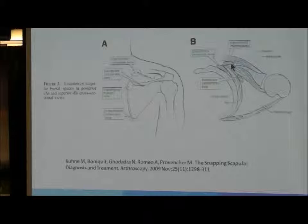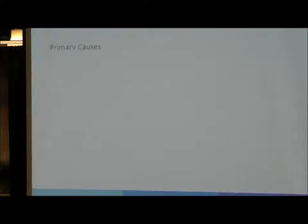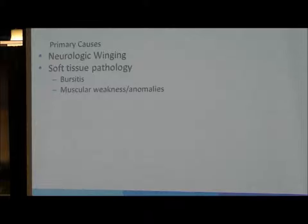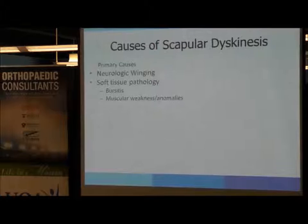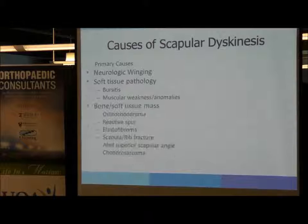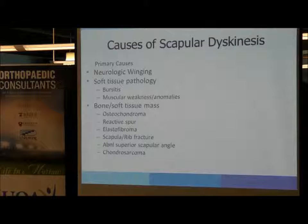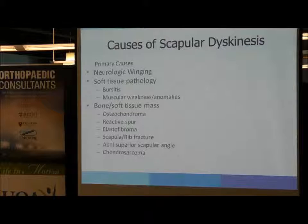There are a wide variety of causes of scapular dyskinesis, separated into primary and secondary causes. Primary causes include neurologic winging from nerve injuries, soft tissue pathology such as inflamed bursa around the scapula, and muscular weakness, which is very common, as well as anomalous muscle insertions. Bone and soft tissue pathology includes osteochondromas, elastofibromas, reactive spurs, fractures, abnormal superior scapular angles, and more worrisome things like malignant tumors such as chondrosarcoma.